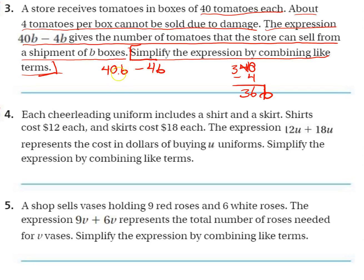We're combining these. Now we could make a bar model, but this problem really isn't practical for that because you would have to do 40 boxes with Bs in them. So essentially all we're doing is 40B minus 4B: 40 minus 4 is 36, and then the B stays.